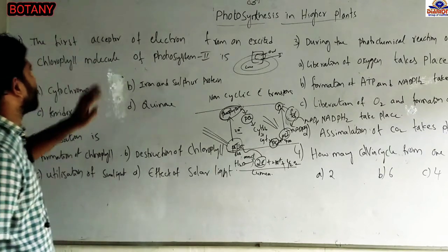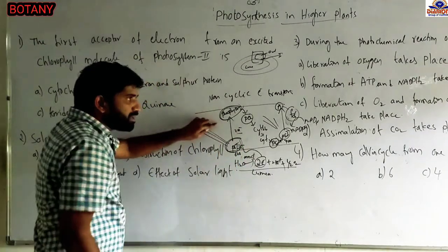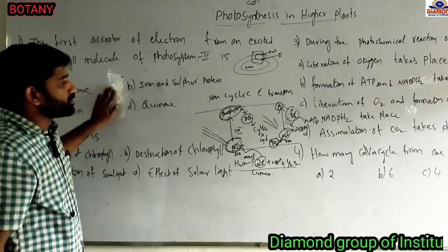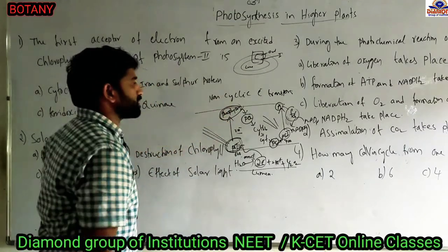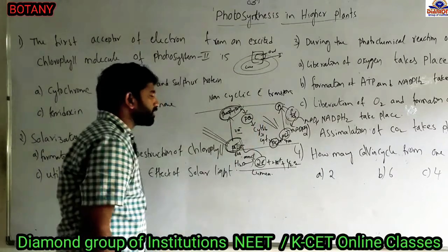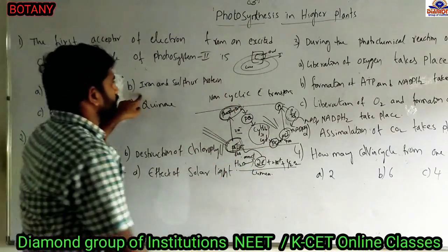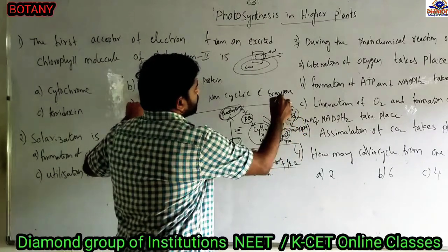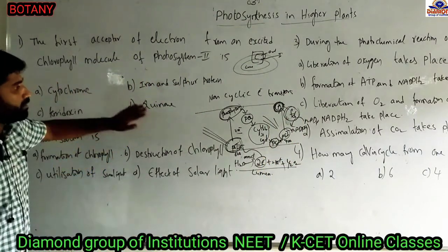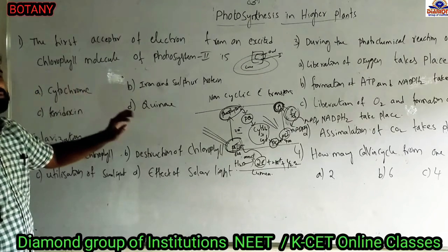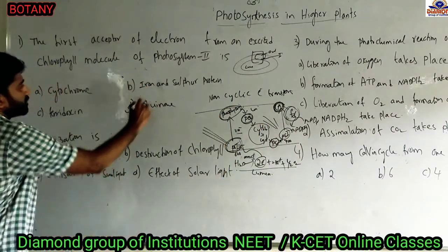The first acceptor of electrons from the excited chlorophyll molecules of photosystem 2: from photosystem 2, the first electron acceptor is pheophytin. Since pheophytin is not given as an option, from pheophytin electrons transfer to plastoquinone. The cytochrome complexes — cytochrome B6 and cytochrome F — and iron-sulfur proteins are the unknown component. Ferredoxin follows, and then the plastoquinone — also called the quinone cycle. So the answer is D.